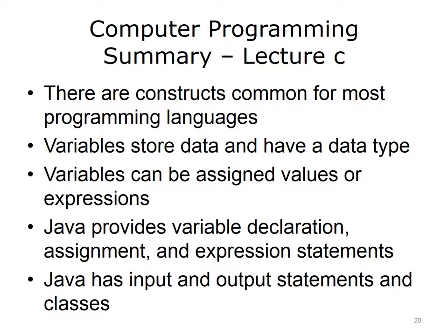To summarize, there are constructs common to most programming languages that provide ways to store values in variables. Because there are different types of values or data, there are different data types such as integer, character, and boolean, among others. The variables can be assigned values or expressions containing variables and values. Java requires that variables be declared with their data type before they are used. Values can be assigned to variables using the equals sign. Java also provides statements for getting input and output from the user during program execution. One way to do output is to use System.out.print. Input can be done using an object from the Scanner class.